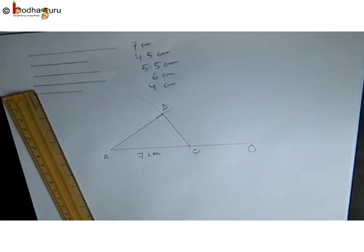So we start with A. We take 4.5 centimeter radius in compass using the 4.5 centimeter line segment as a reference.